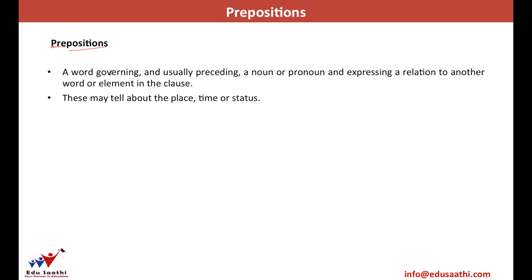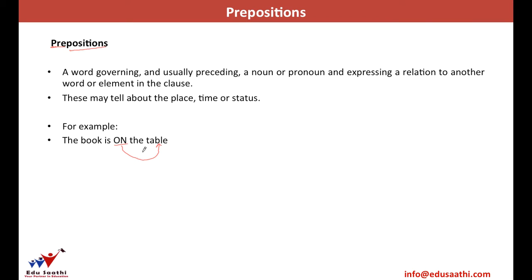By position, we not only mean the place but also the time or status of any noun. For example, in the sentence 'the book is on the table,' 'on' comes before 'the table' — it comes pre the table — and tells you about the position of the book. It tells you where the book is, so it becomes a preposition.